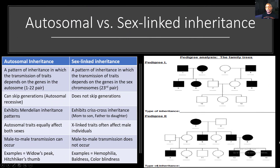Now let's take a look at our autosomal versus sex-linked inheritance. Autosomal is a pattern of inheritance in which the transmission of traits depends on the genes on the autosomes — that's going to be pairs one through 22, like we said in the karyotypes earlier. But in sex-linked inheritance, the transmission of traits depends on the genes on the sex chromosome — that's going to be that 23rd pair on the karyotype.